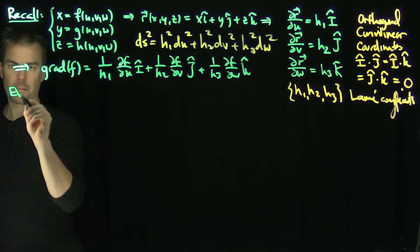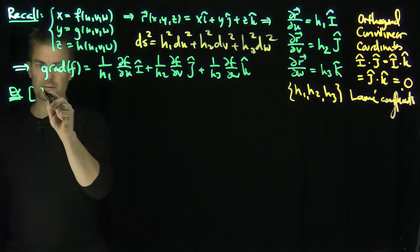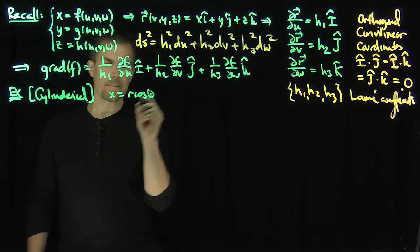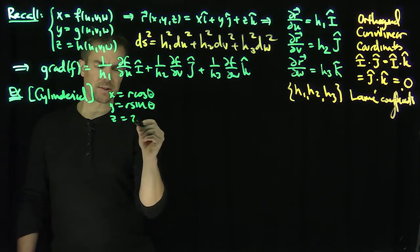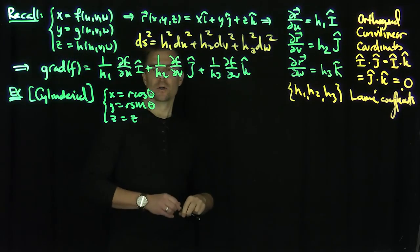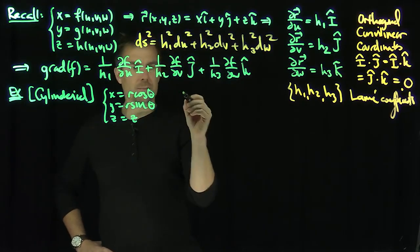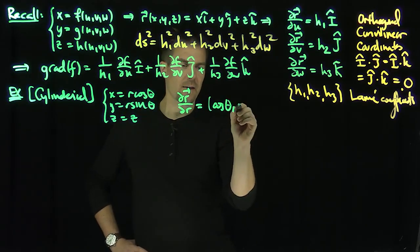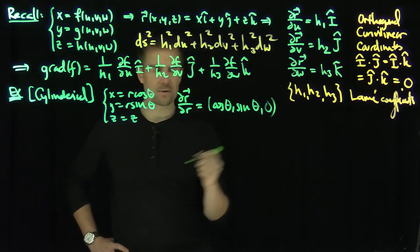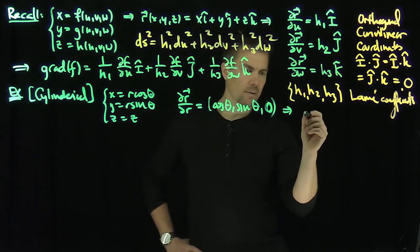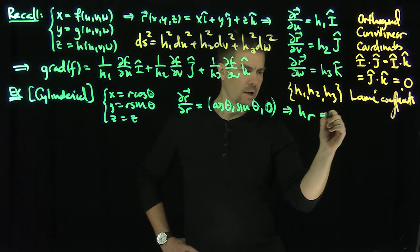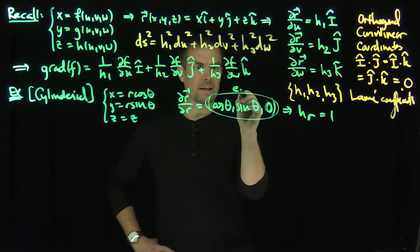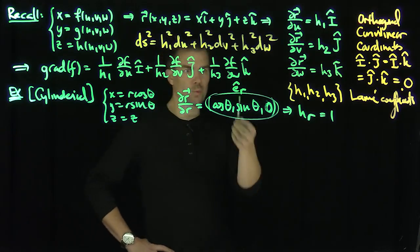Let's do some examples. The first example is cylindrical coordinates. Here x is r cosine θ, y is r sine θ, and z is just z. So partial r partial r is going to be (cosine θ, sine θ, 0), which means h_r is equal to 1 — it's already a unit vector. I'm going to call this vector e_r, since when the Lamé coefficient is 1, you get a unit vector directly.